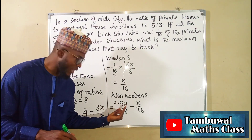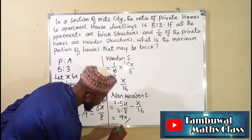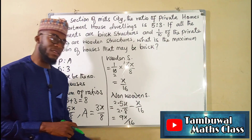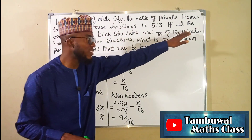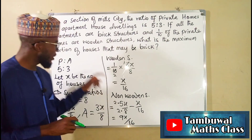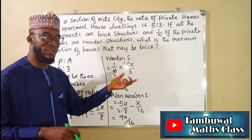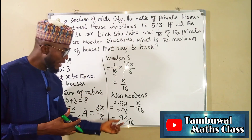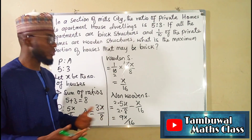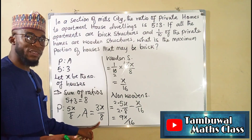Two times five X is ten X, minus X is nine X. So we have nine X over the common denominator sixteen. Nine X over sixteen are the portion of private homes that are not wooden structures. Since the question asks for the maximum portion of brick houses, we can assume the entire non-wooden private home portion is brick — that gives us the maximum.